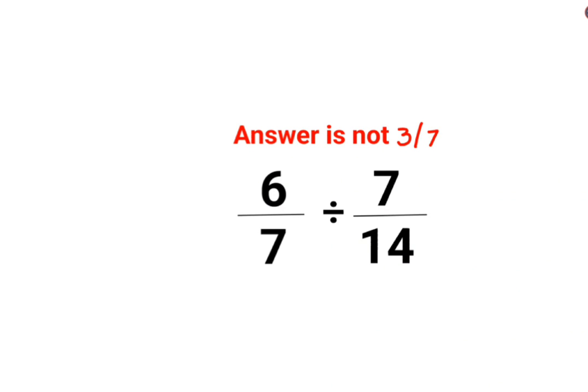Good morning everyone. So yes, a lot of people thought that this is so easy. The answer for this question has to be 3 by 7 because this 7 and 7 gets cancelled. This is 2 3s and 2 7s. So answer is 3 by 7.